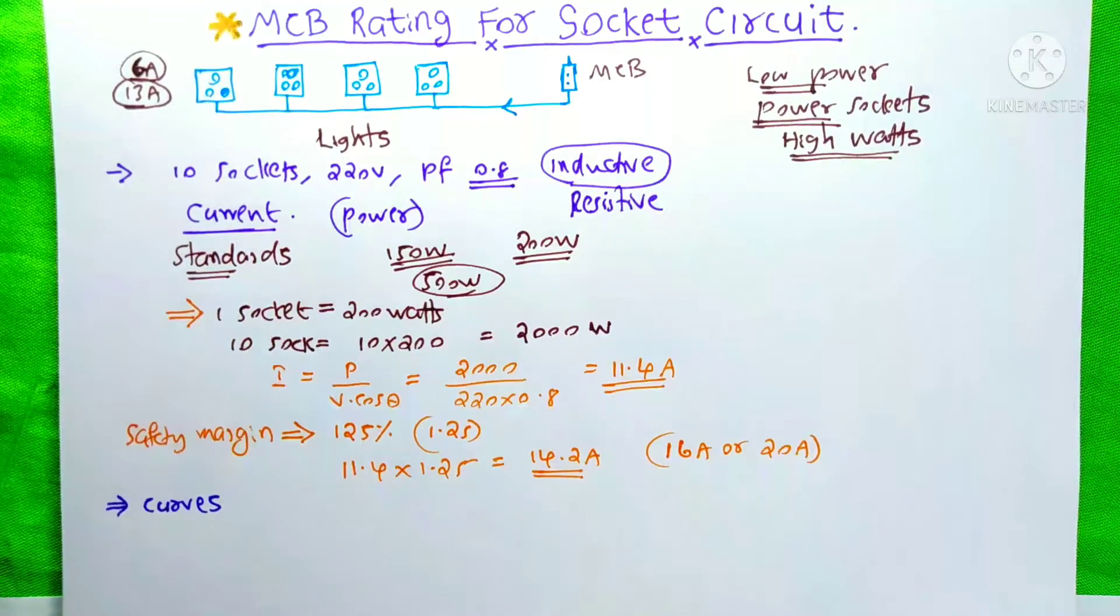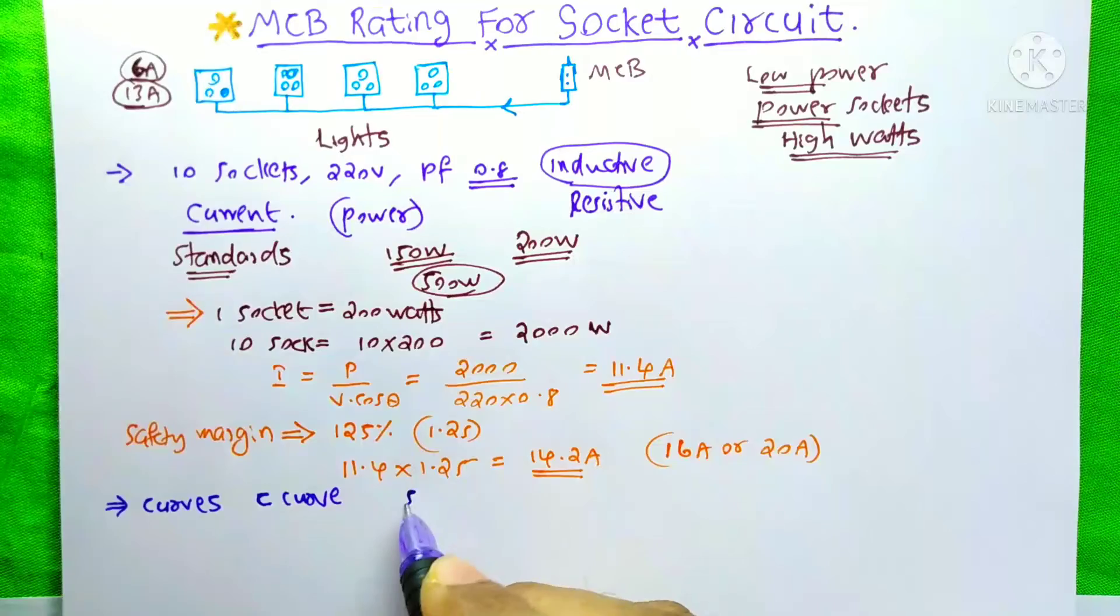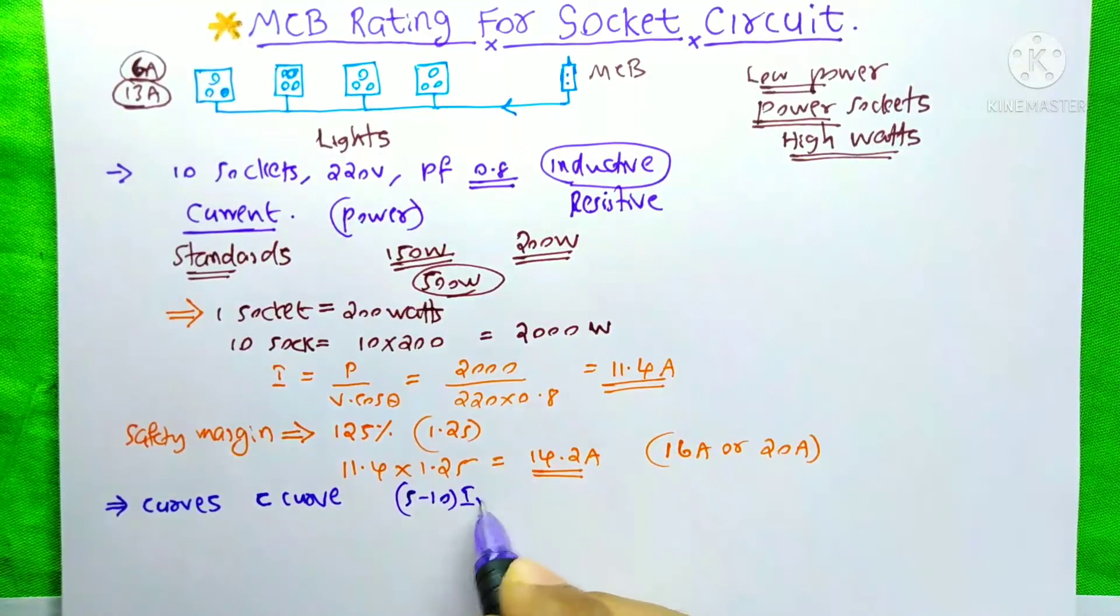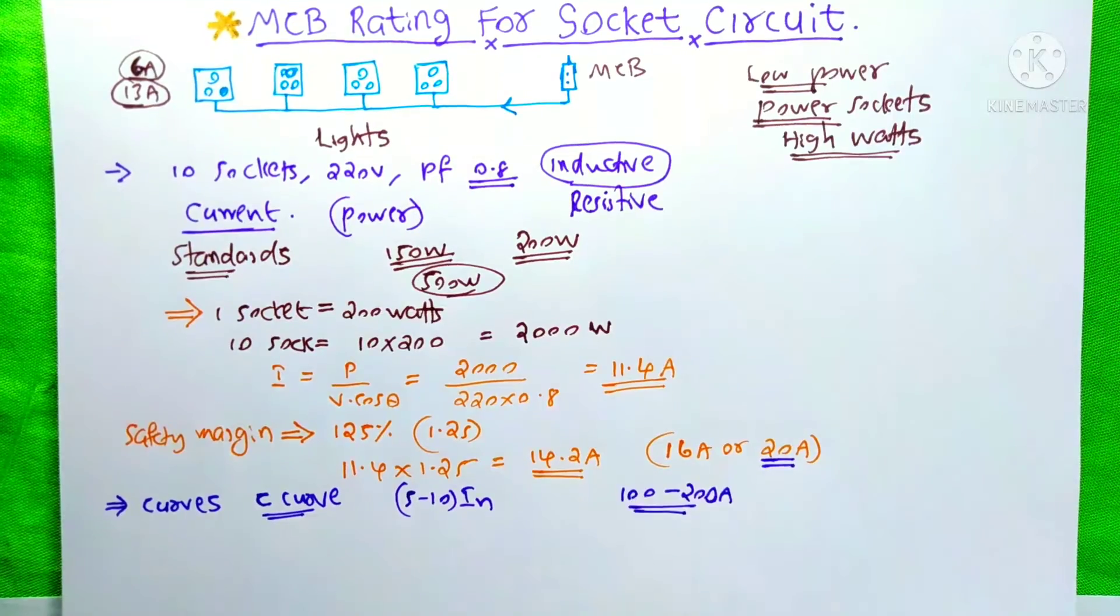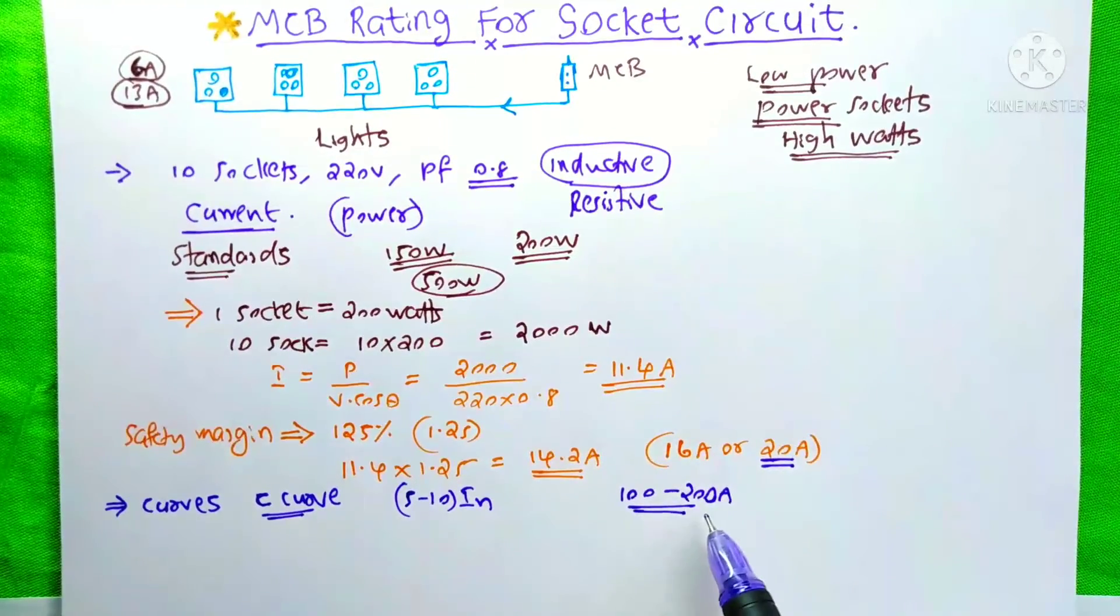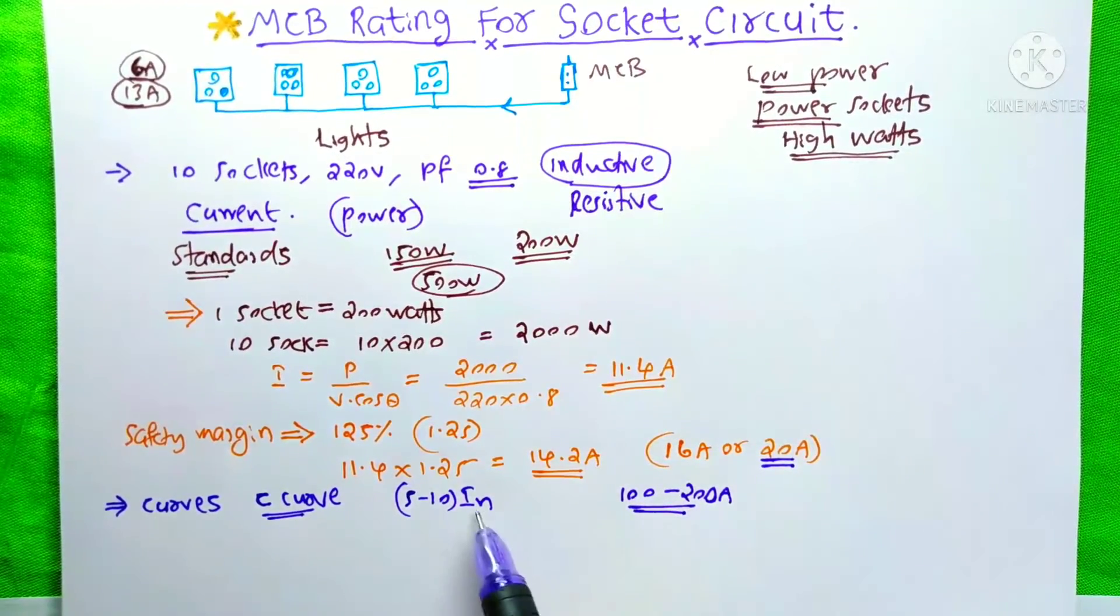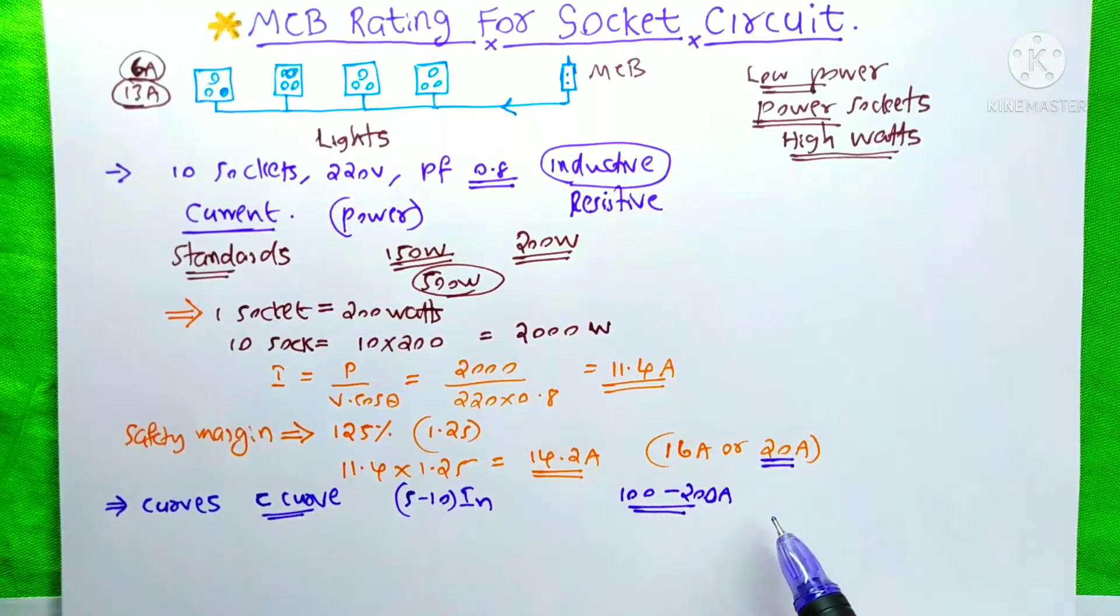Now we need to select the curve for our MCB. Here we need to select only the C curve. You know the C curve allows 5 to 10 times of the rated current. Which means if your MCB is of 20 Ampere, then it will allow 100 to 200 Ampere. That means 5 to 10 times of the rated current for a short duration of time.